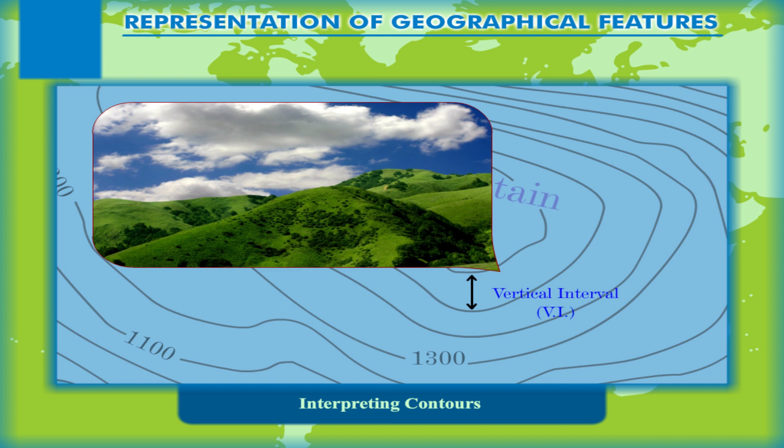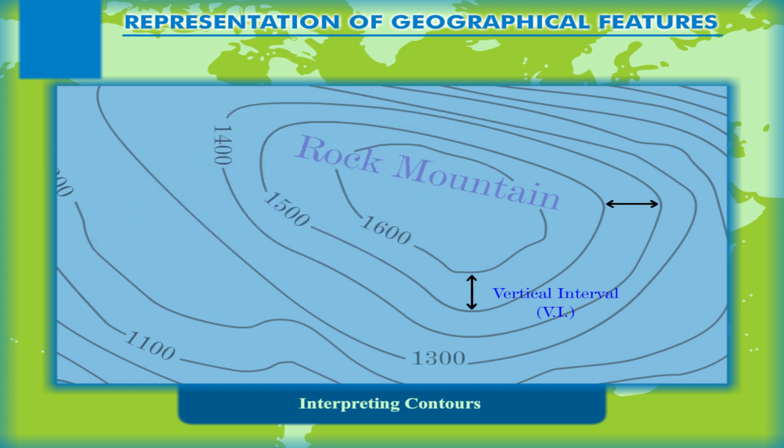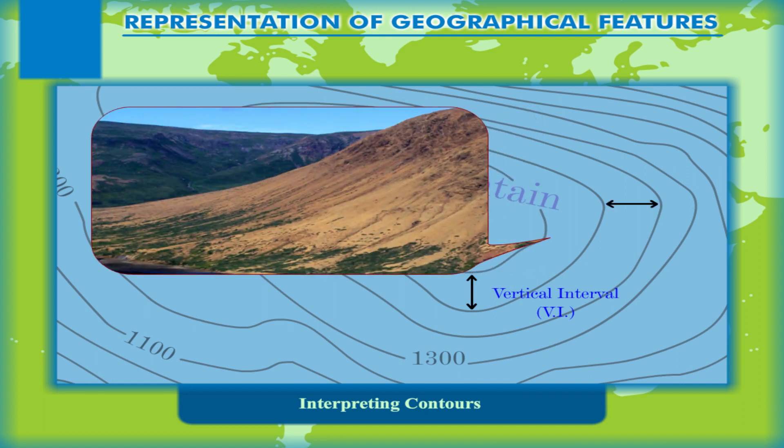The vertical interval is usually constant on a map. The horizontal distance between any two contours depends upon the slope of the land. This horizontal distance is called the horizontal equivalent, or HE.